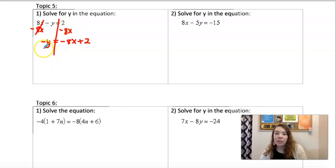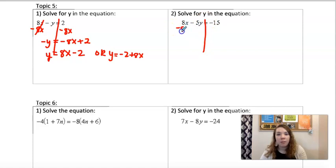So now 8x is positive. 2 is negative. Or you could have your negative 2 plus 8x. All right. Here we're solving for y again. So we'll start by subtracting x, just like on the last one.